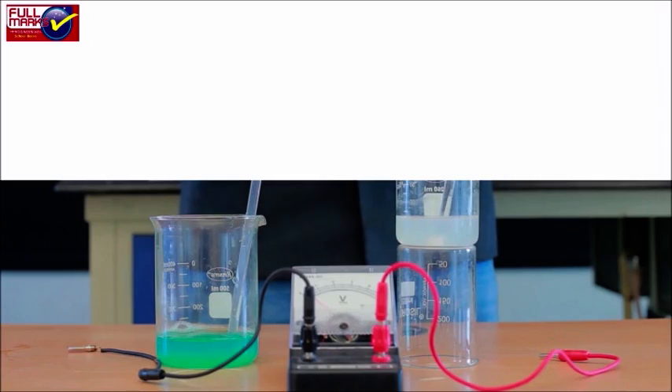Connect both beakers via KCl salt bridge and note down the voltmeter reading. Repeat the procedure with different concentrations of CuSO4 but same 1M concentration of ZnSO4.